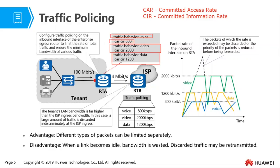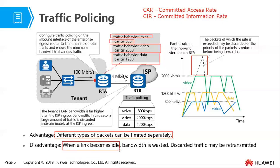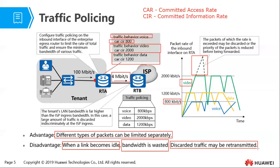The advantage of traffic policing is that different types of packets can be limited separately — we don't drop all packets at the same rate. The disadvantage is that when the link becomes idle, bandwidth is wasted. For example, if we have no video data and the link has spare capacity, voice still cannot exceed 800 kbps. Also, discarded traffic may need to be retransmitted.